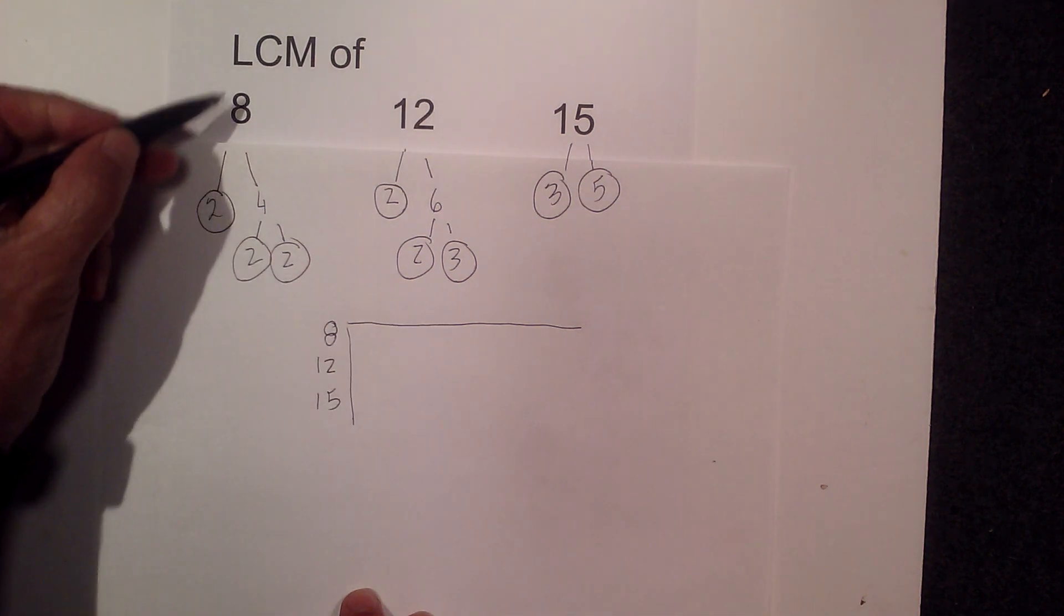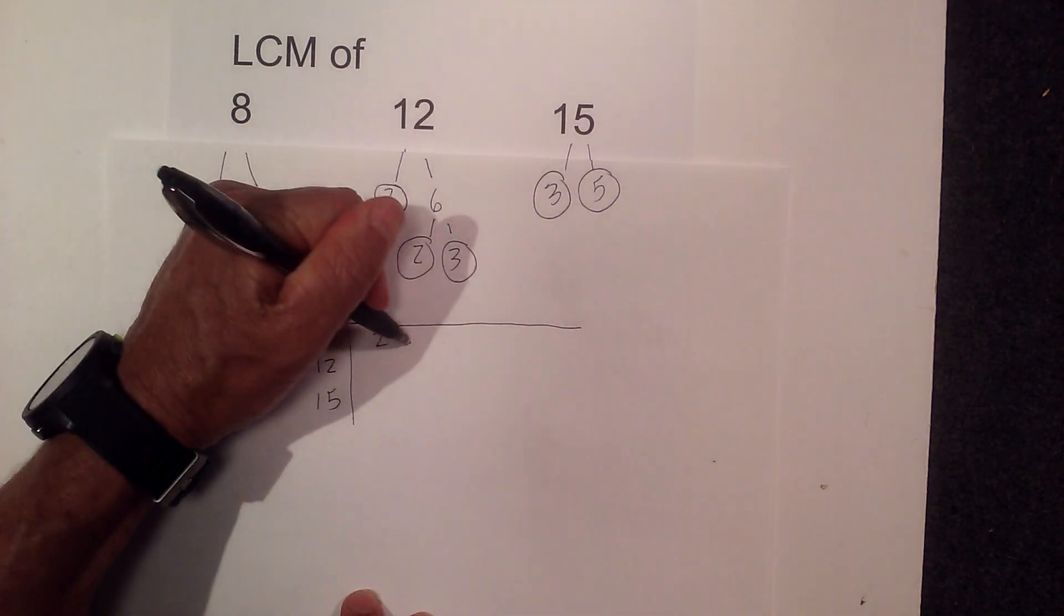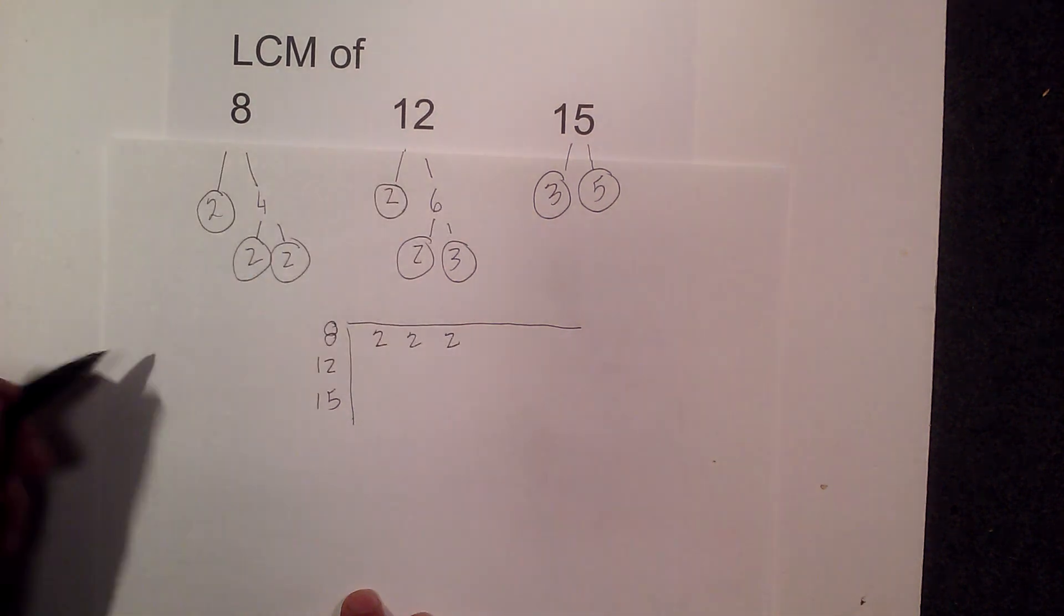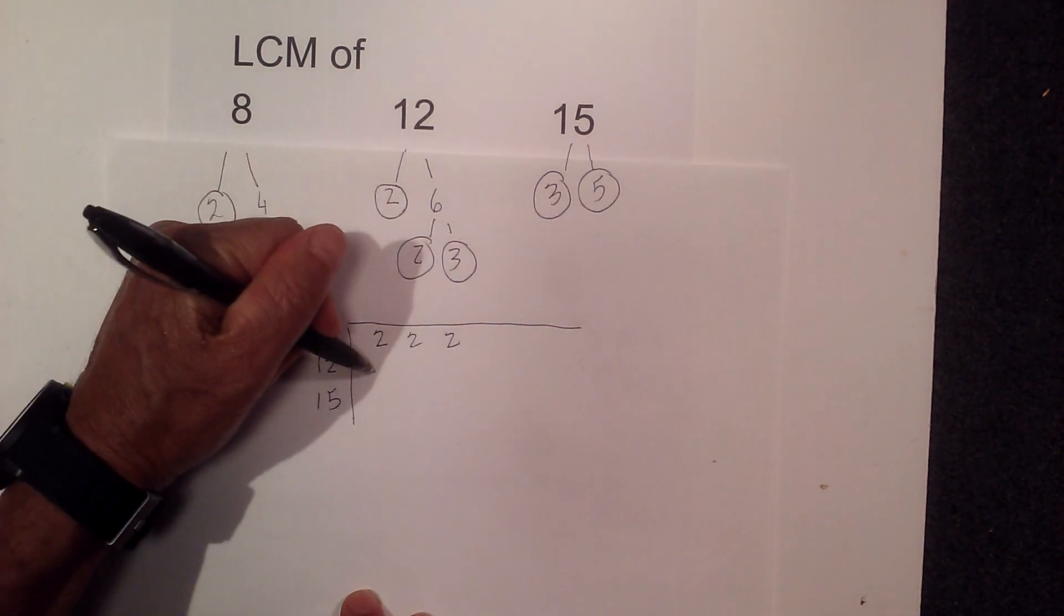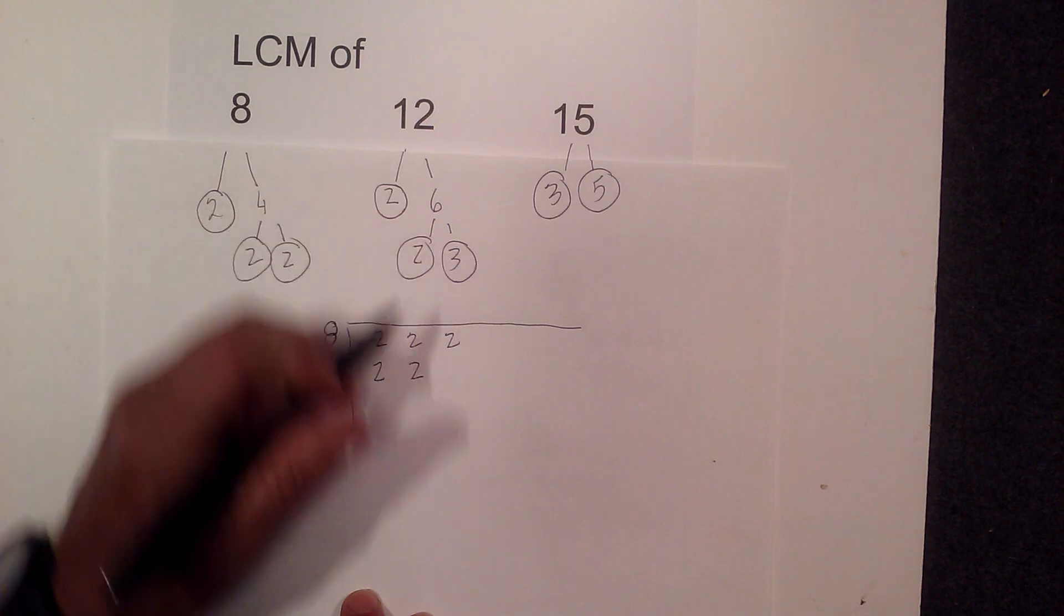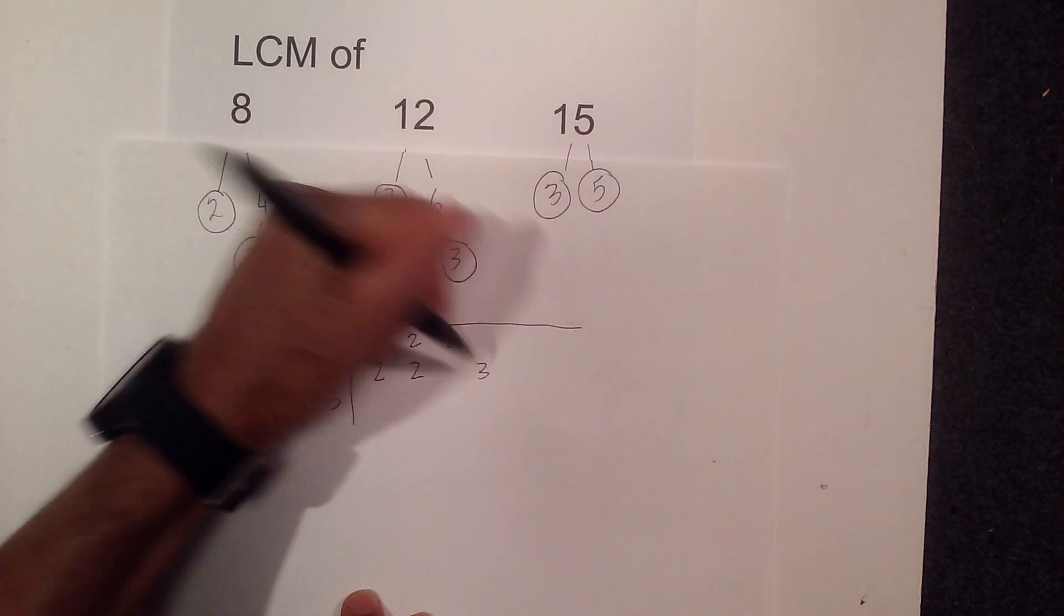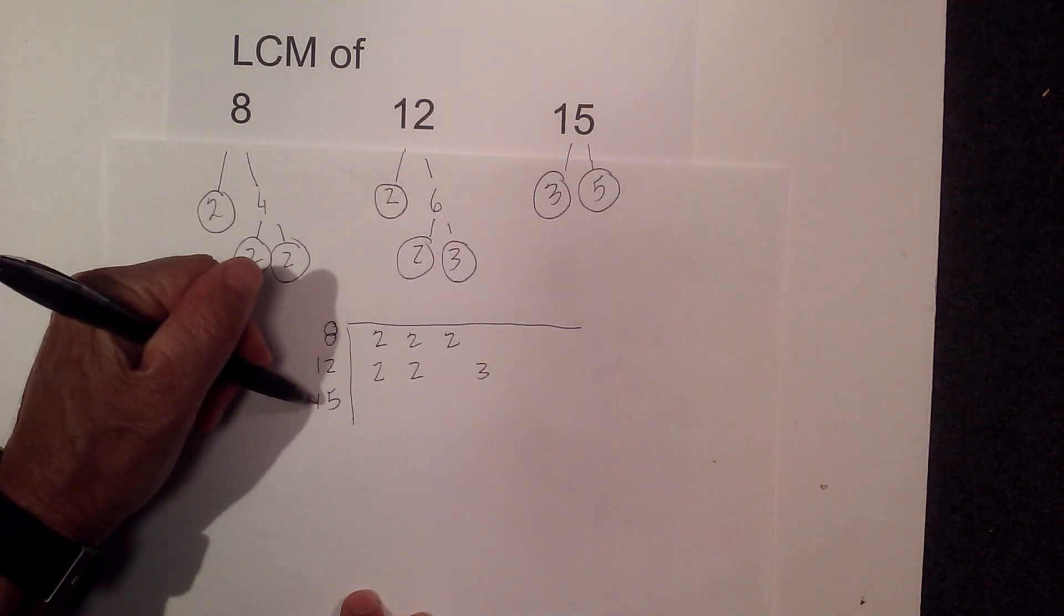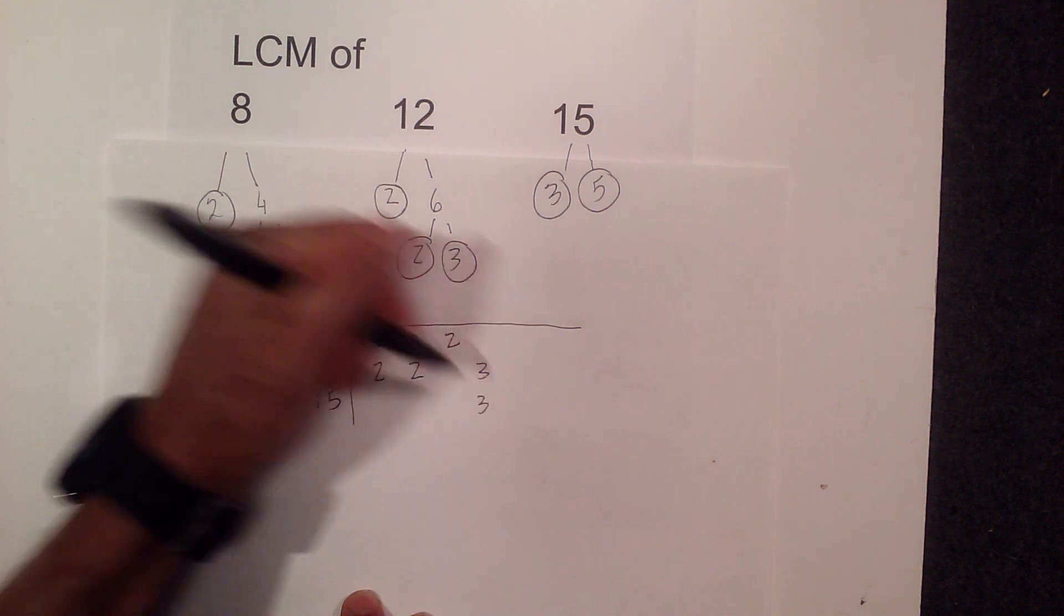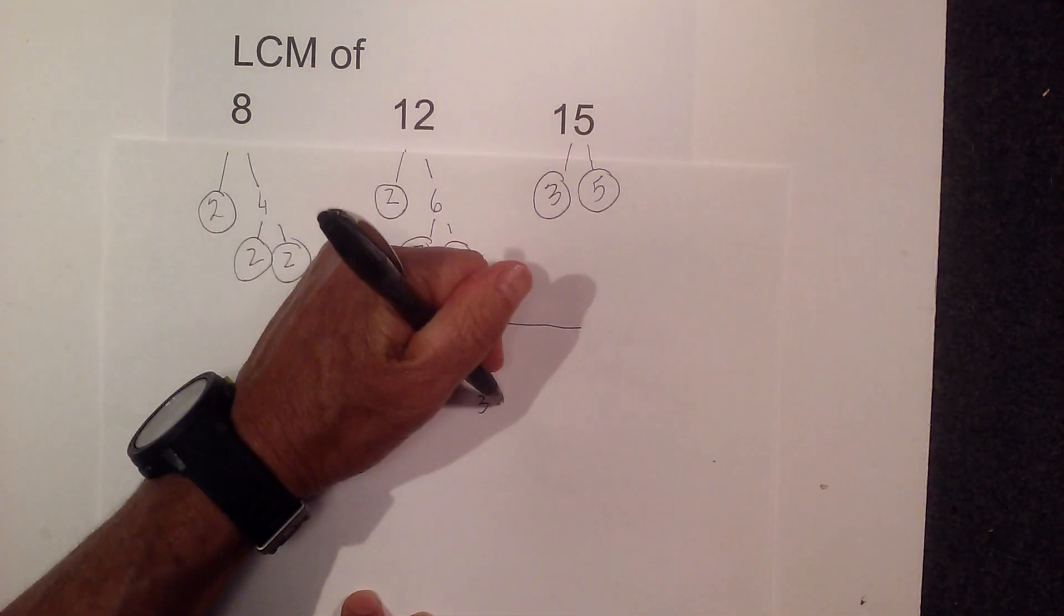I'm going to write all the prime numbers. All the prime numbers of 8 are 2, 2, and 2. Now I'm going to write the prime numbers of 12, 2, 2. I do not have a 2 so I'm going to skip a space. And then for 15 I have a 3 and a 5.